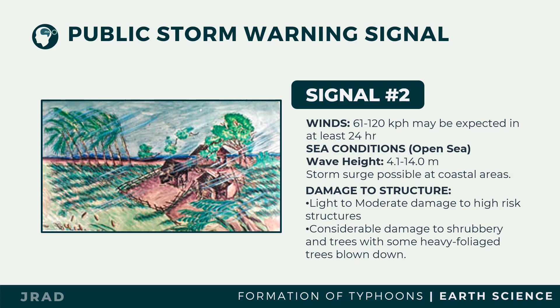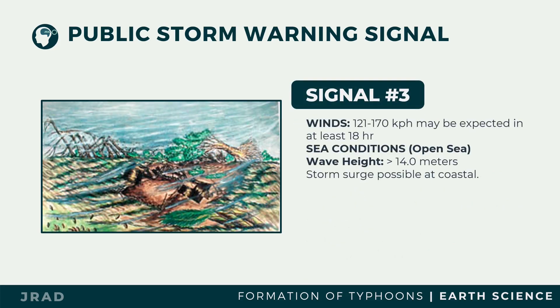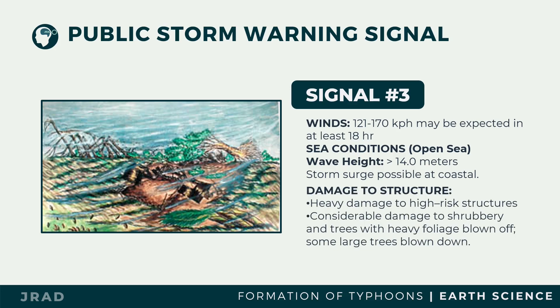Tropical Cyclone Wind Signal Number Three: winds of 121 to 170 kilometers per hour may be expected in at least 18 hours. There is heavy damage to high-risk structures, moderate damage to medium-risk structures, and increasing damage to old dilapidated residential structures and houses of light materials. Dwarf-type or hybrid coconut trees will be tilted and downed. Considerable damage to shrubbery and trees, with heavy foliage blown off.